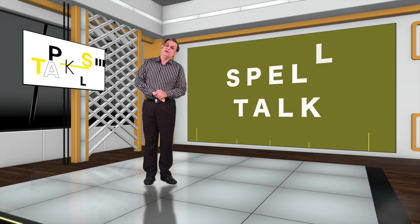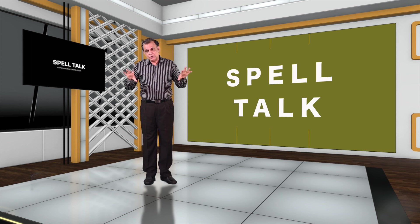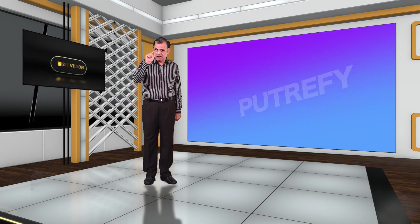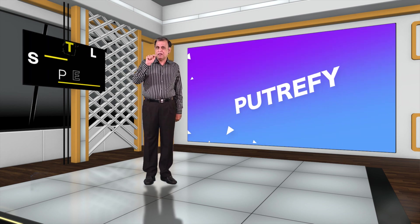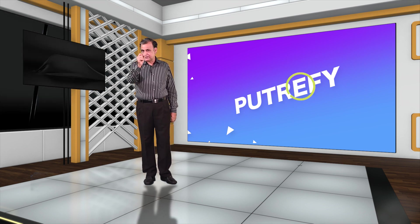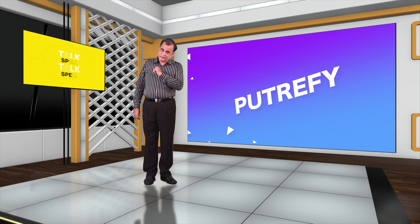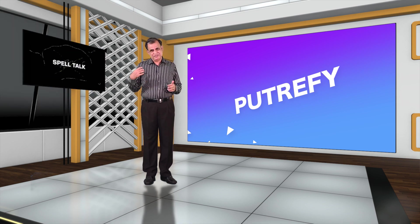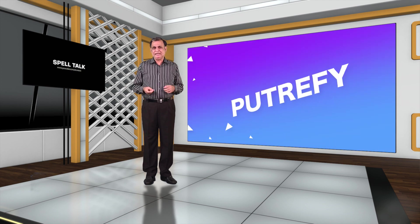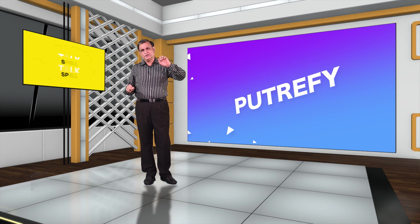And then we have putrefy. The spelling is P-U-T-R-E-F-Y. The tricky area is the one letter E just before F-Y. Putrefy means fester, decay, rot.